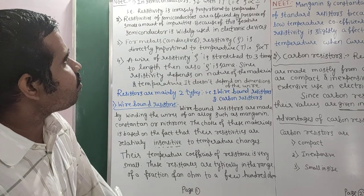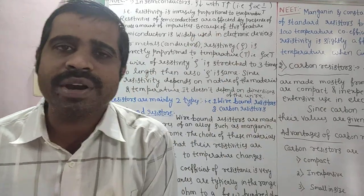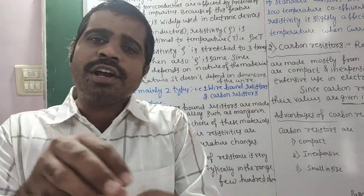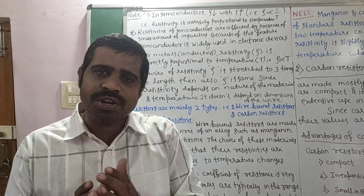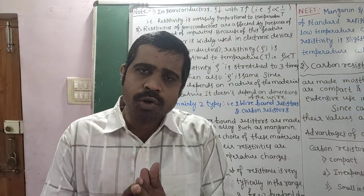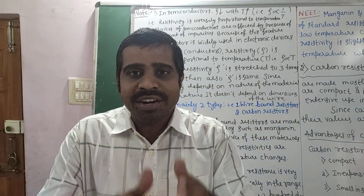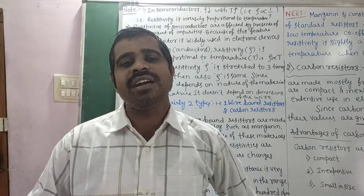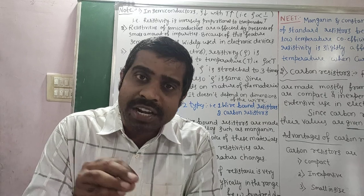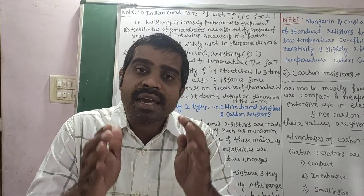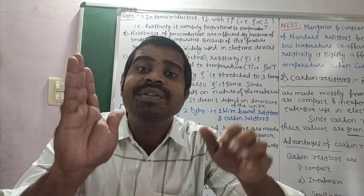Resistivity of semiconductors is affected by the presence of small amounts of impurities. Semiconductors have a beautiful property: by adding a small amount of impurity — trivalent or pentavalent — we can change their resistivity. We can decrease their resistivity and hence increase their conductivity.